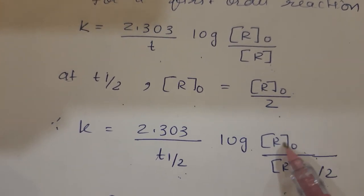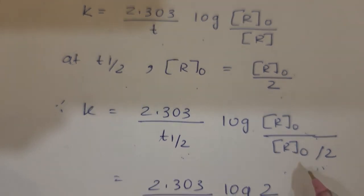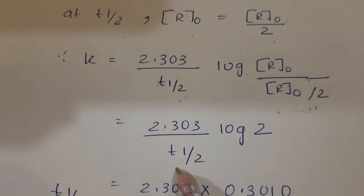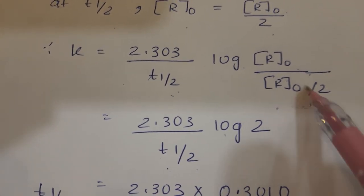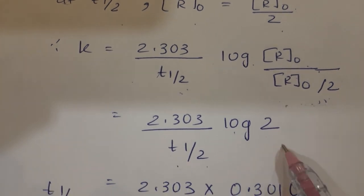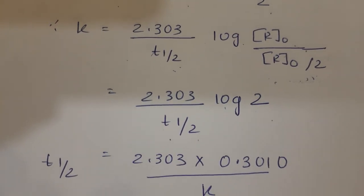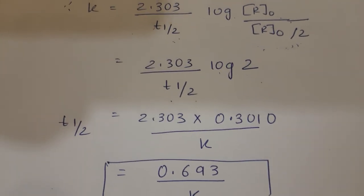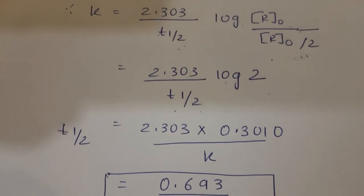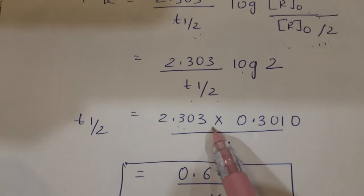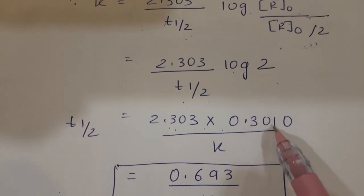R₀ and R₀ cancel, so it is 2.303 upon t half log 2. This will come to 0.3010, and t half equals 2.303 times 0.3010.